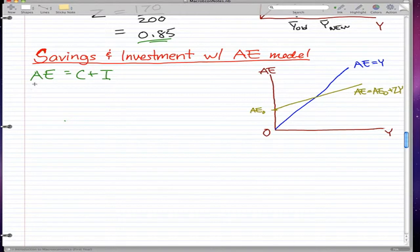And we also know that there's another formula, and that is AE equals Y. And since AE is equal to C plus I and AE is equal to Y, that must imply that C plus I is equal to Y. Makes perfect sense.